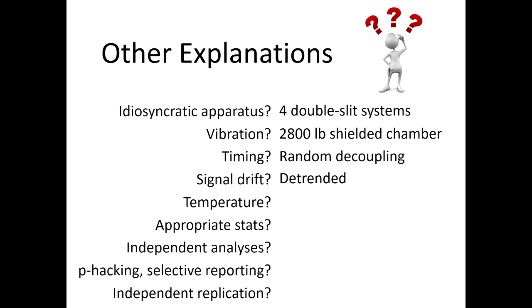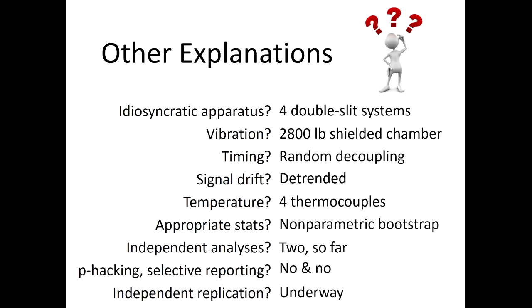Signal drift is always a problem as well. Very small changes in temperature will cause interferometers to change, so when necessary, we would de-trend the data. We measured temperature at the laser itself, the double slit near the human with multiple thermocouples, and we didn't find any effect due to temperature. We were very careful not to use parametric statistics on this. All of the stats were based on non-parametric bootstrap statistics, which take into account funny business that may be going on in terms of the distribution of data. I mentioned that there are two independent analyses so far. We know it's not p-hacking, we know it's not selective reporting, and independent replication is underway.